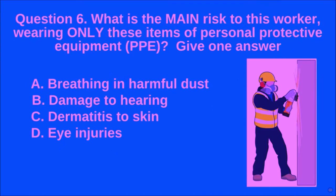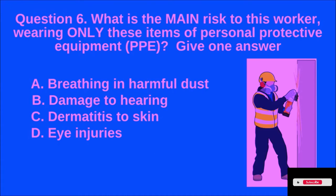Question 6: What is the main risk to a worker wearing only these items of personal protective equipment (PPE)? Give one answer. A: breathing in harmful dust, B: damage to hearing, C: dermatitis to skin, D: eye injuries. D is the correct answer.